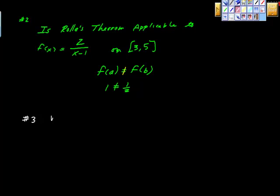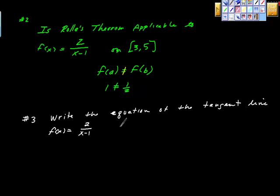Question 3 says write the equation of the tangent line. f(x) = 2/(x-1), and we want that for x = 3. We'd have to know what the derivative is, but we already know because we already did it. We're going to carry our work from the last problem forward. We also know that f(3) = 1.